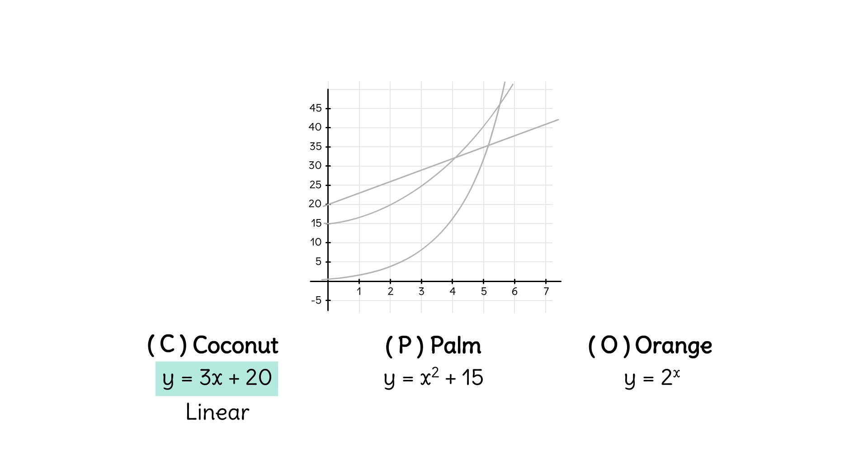The only straight line on the graph is here. Coconut Island started with 20 turtles, more than any other island, but the population only increased by a constant 3 turtles per year.